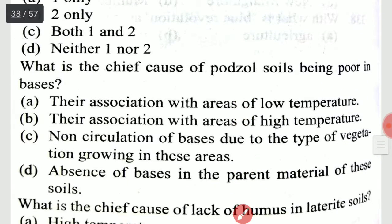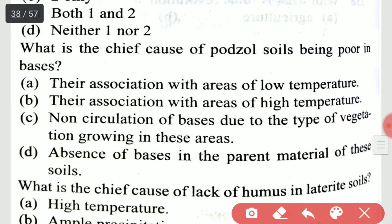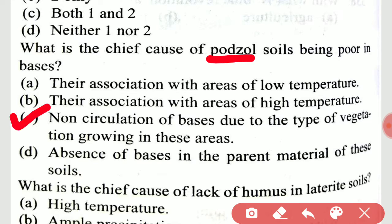What is the chief cause of partial soil being poor in bases? It is non-circulation of bases due to the type of vegetation growing in these areas.